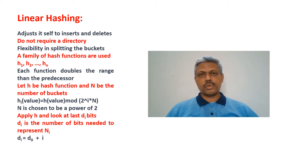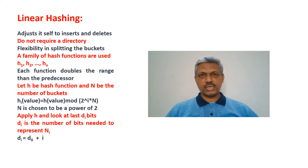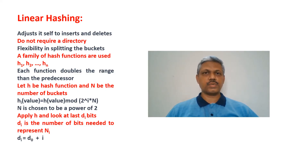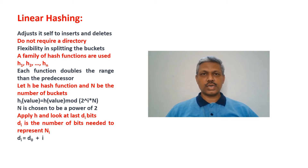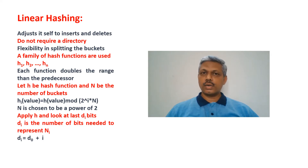Each hash function doubles the range of its predecessor and it is based on a modulo value. If hi is the hash function at the ith level, hi of value is computed as h of value modulo 2 to the power i multiplied by n, so the hash value range is doubled. Extendable hashing has a problem of overflow chains due to skewed distributions, and the directory of pointers is an overhead. To avoid all these things, linear hashing is proposed.